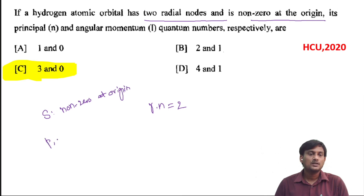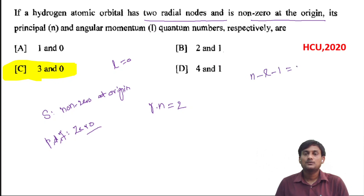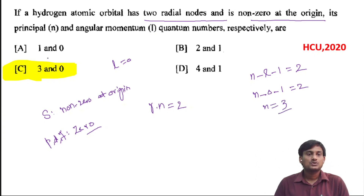But if you take p orbital or d orbital or f orbital at origin, the wave function is 0. So here l should be 0. Since it is an s orbital, l should be 0. And there are two radial nodes. The formula for radial nodes: n minus l minus 1 should be equal to 2. Here l is 0, so n minus 0 minus 1 equals 2, giving n equal to 3. The answer is n = 3 and l = 0 (angular momentum).